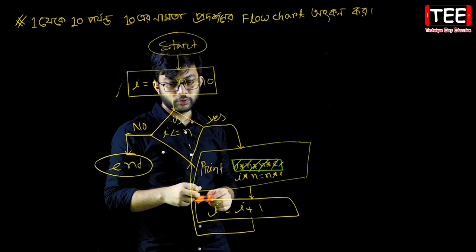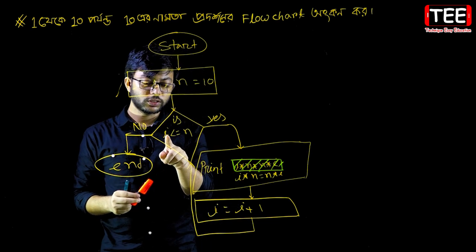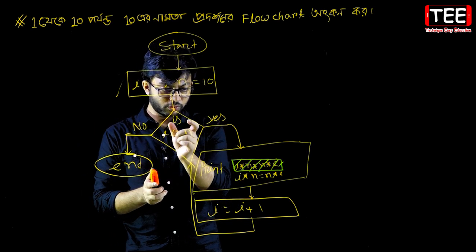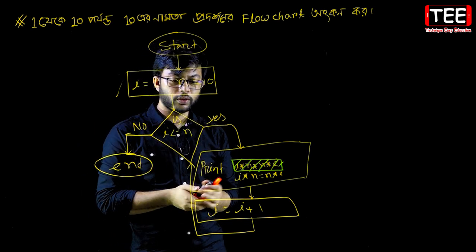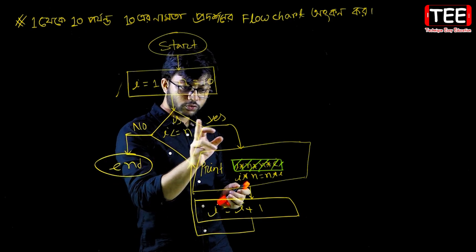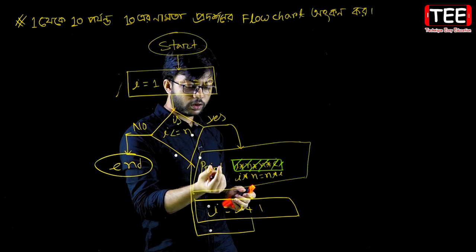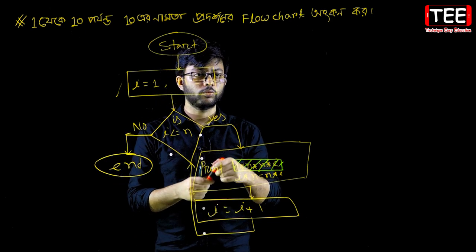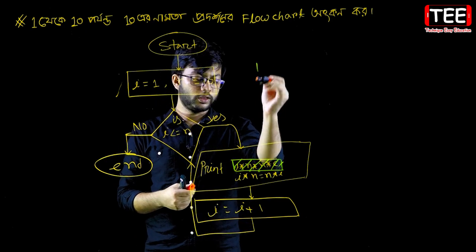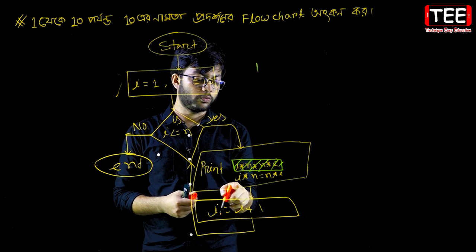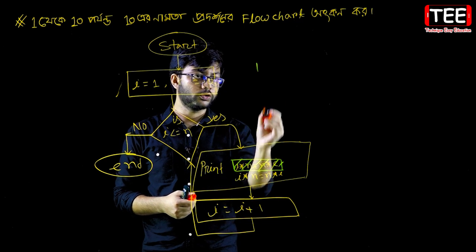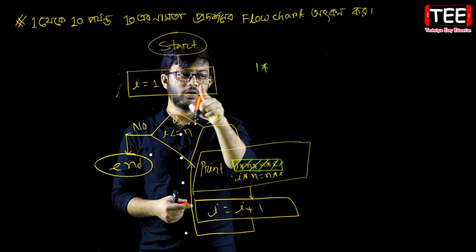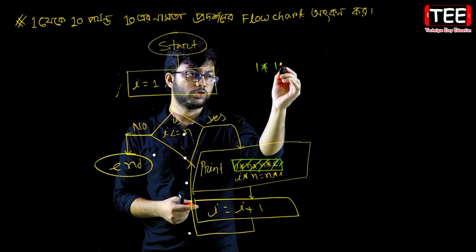n is equal to 10, so check 1 and 10. If it is true, yes — print: i am, i am, i am, i am, i am, i am, i am, i am, i am, i am.